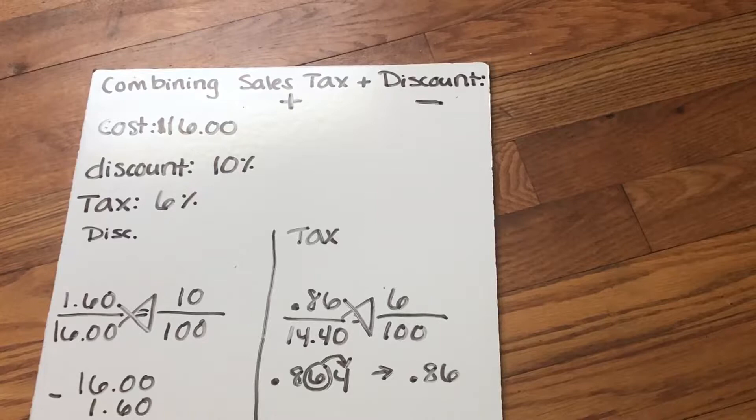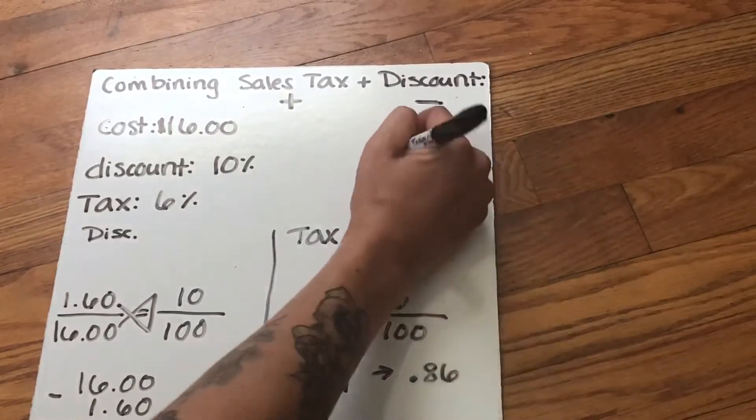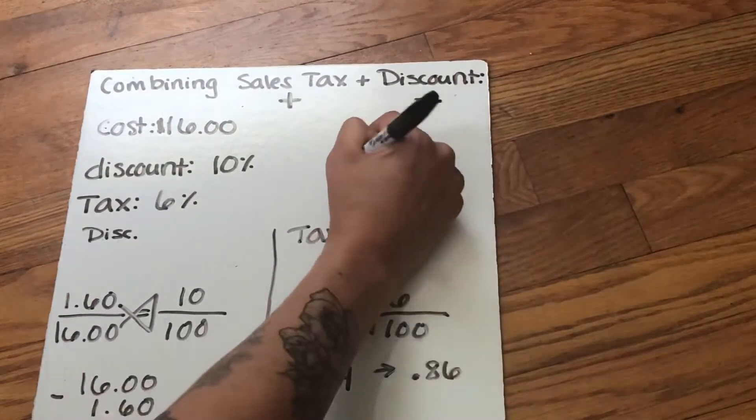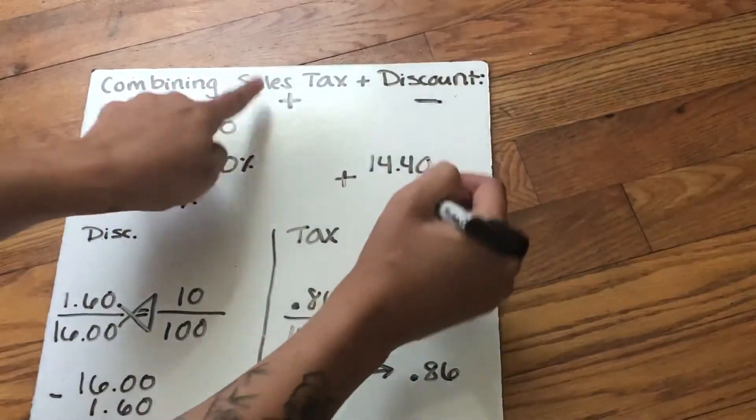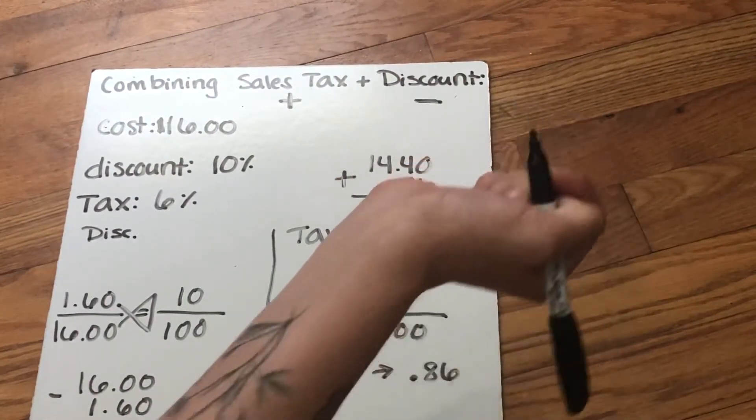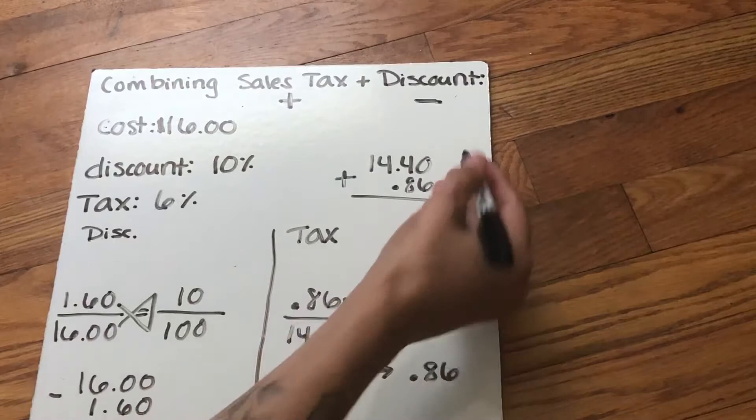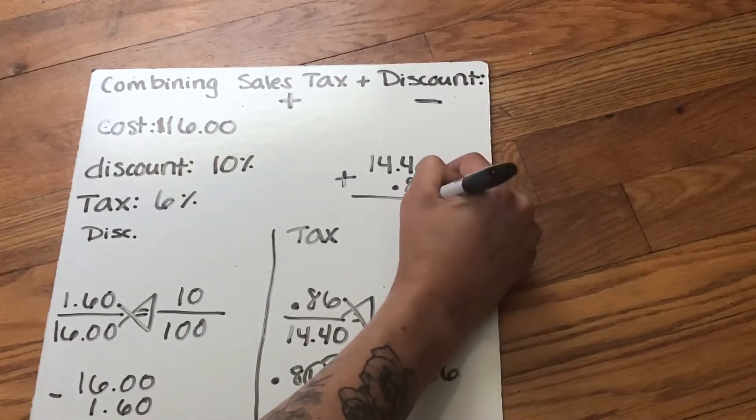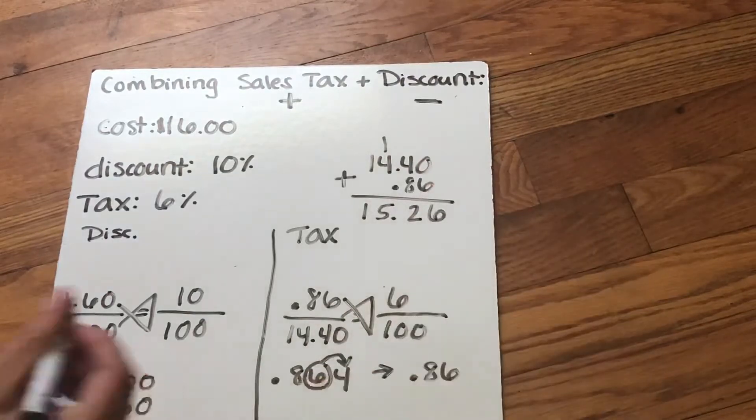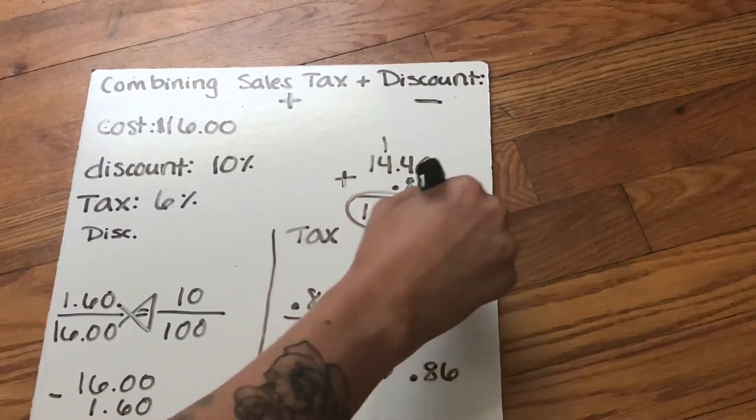So the final step, the final thing that I need to do is figure out how much I'm paying. So I have that $14.40, which was the price of the pencils with the discount. And I'm adding my sales tax, which was 86 cents. And my new total is going to be $15.26.